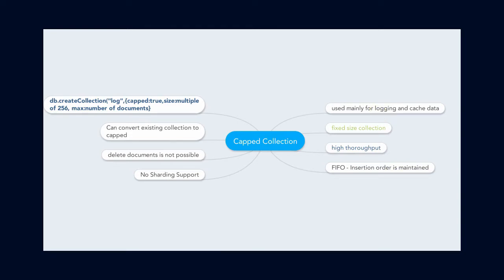Irrespective of these advantages, there are a few disadvantages. You cannot delete documents — you have to drop the entire collection. Similarly, when you want to update a capped collection you need to create a separate index for that. Finally, we do not have sharding support for capped collections, which is an important limitation, so you need to handle your data carefully.